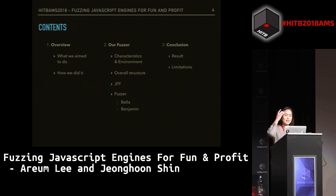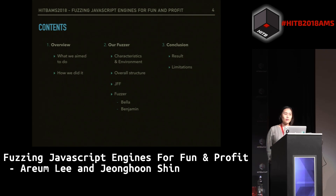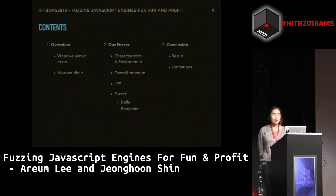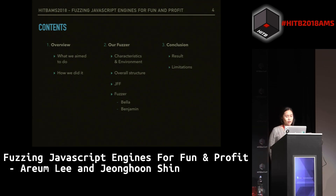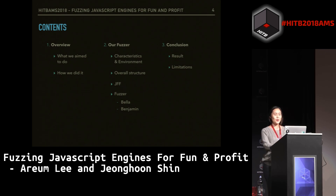We're going to present about what we did in this order: we're going to give an overview about what we aimed to do and how we did it, then give specifics about our fuzzer, describe each part in detail, and then give a conclusion and end the presentation.